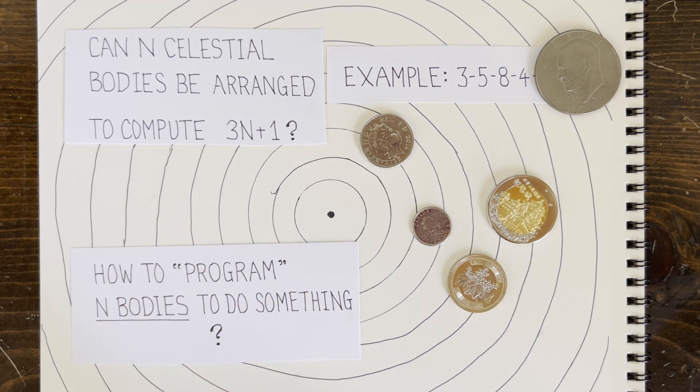So maybe some machine learning optimization can figure out where all the bodies should be placed to ultimately really simulate the 3n plus 1 rule. Okay, some food for thought.